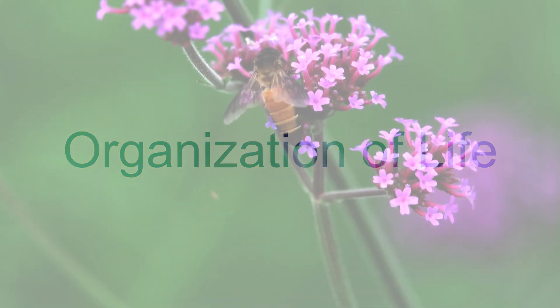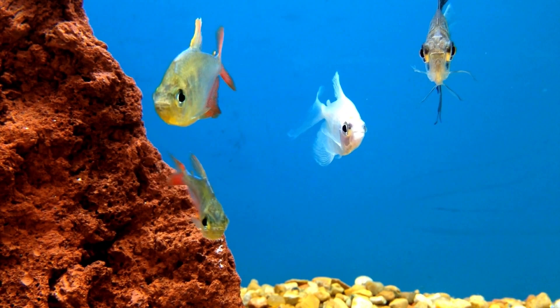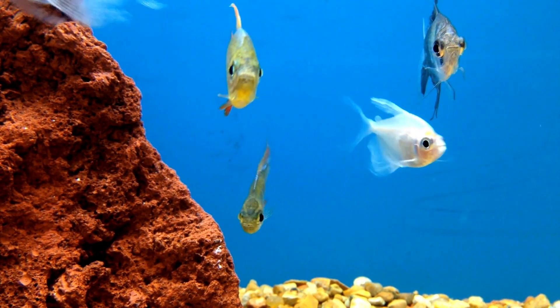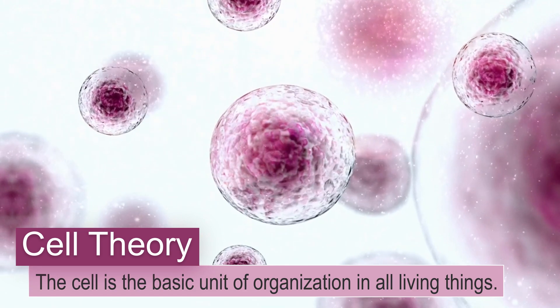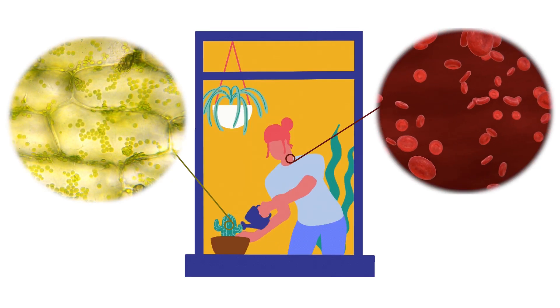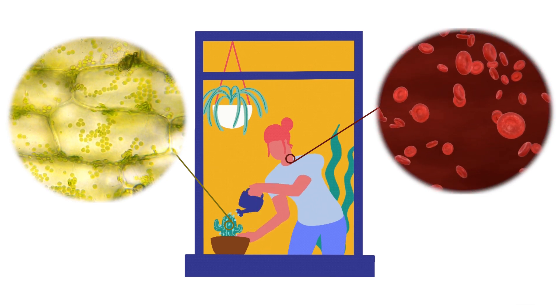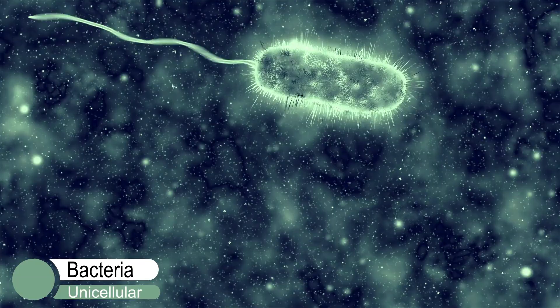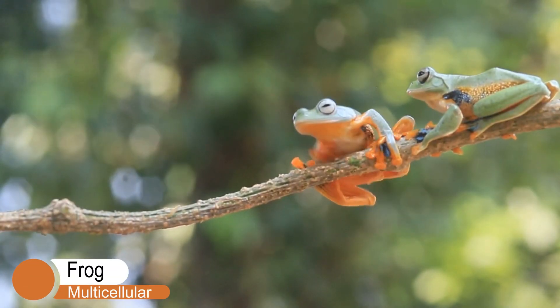In this lesson, we will take a look at organization of life. Most life forms can be organized into different levels. According to the cell theory, the cell is the basic unit of organization in all living things. All organisms are composed of cells. Some organisms consist only of a single cell while others are multicellular.